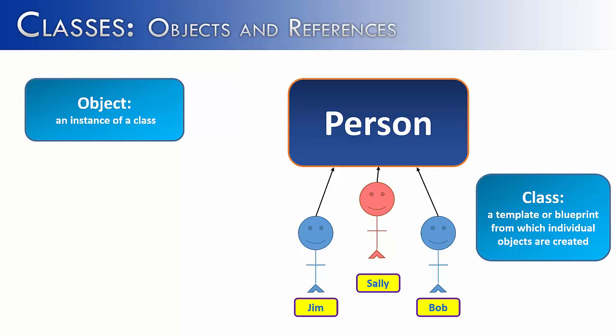So when I'm talking about an object, what I'm really saying is one concrete example of a class. So the class gave me the blueprint, and then the object hammered out and filled in the details of what the object should look like. So Jim is an object, Sally is an object, and Bob is a distinct object of the Person class.